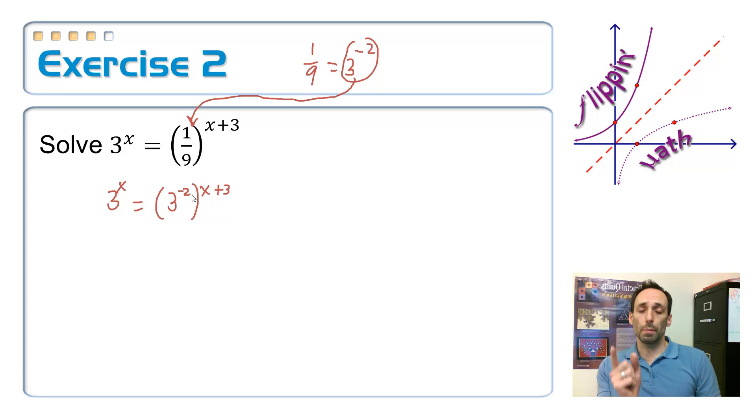Okay, and now over on the right hand side you have a power raised to a power and you're supposed to multiply those things. So, again, 3^x, just rewriting, is equal to 3 to the, and now the new power is negative 2 multiplied times (x+3).